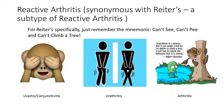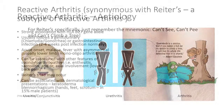Now looking at reactive arthritis, which is synonymous with Reiter's disease — a subtype of reactive arthritis. A useful mnemonic to remember what Reiter's involves is 'can't see, can't pee, can't climb a tree,' referring to the triad of uveitis/conjunctivitis, urethritis, and peripheral arthritis.